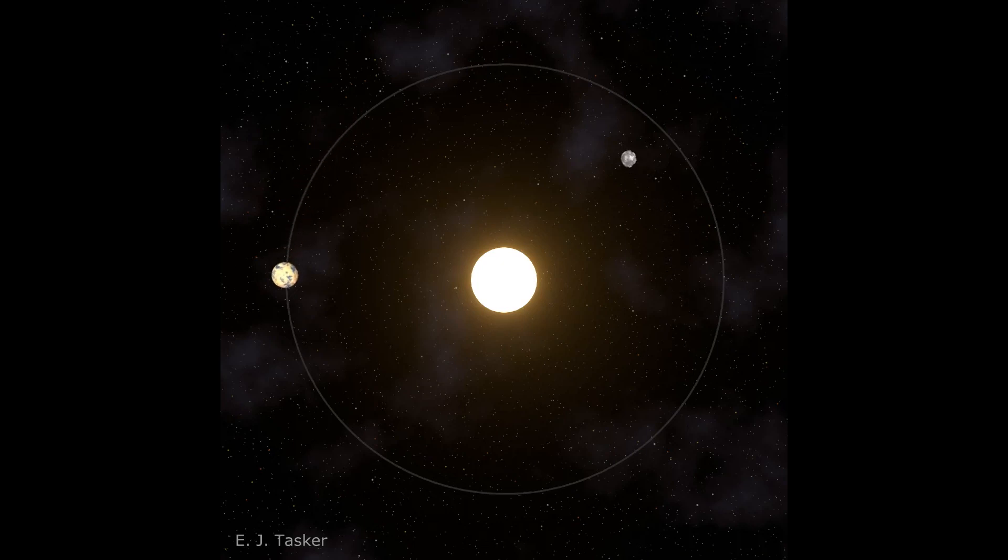Imagine a horseshoe-shaped path that loops around both Earth and the Sun. Our mini-moon travels along this path, alternating between being pulled closer to Earth and drifting farther away.